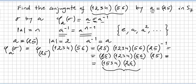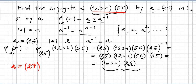Now the second question: it's still the conjugate of (1 2 3 4)(5 6), but this time a = (2 7), so a is the transposition that sends 2 to 7 and 7 to 2. This is still in S7.